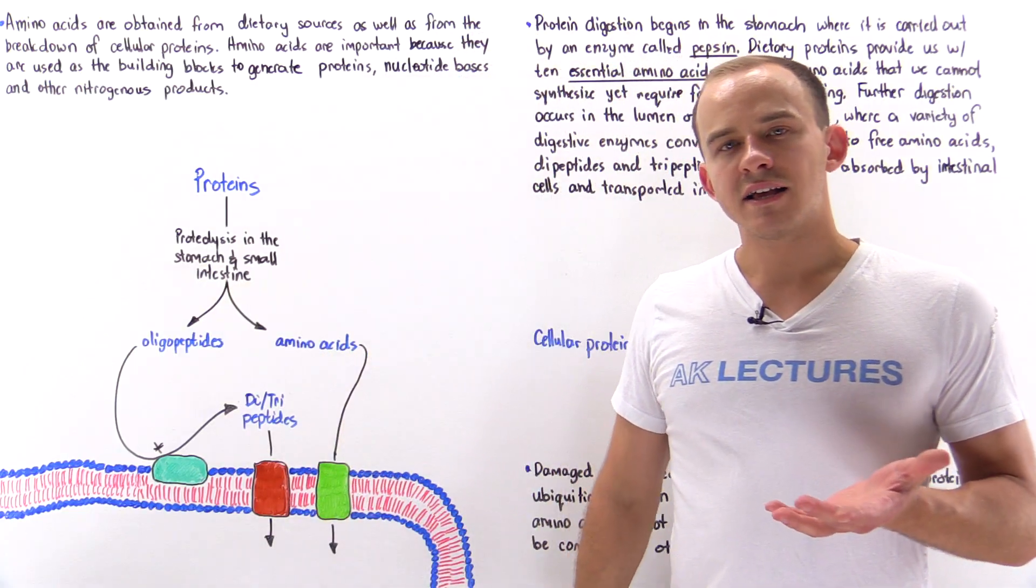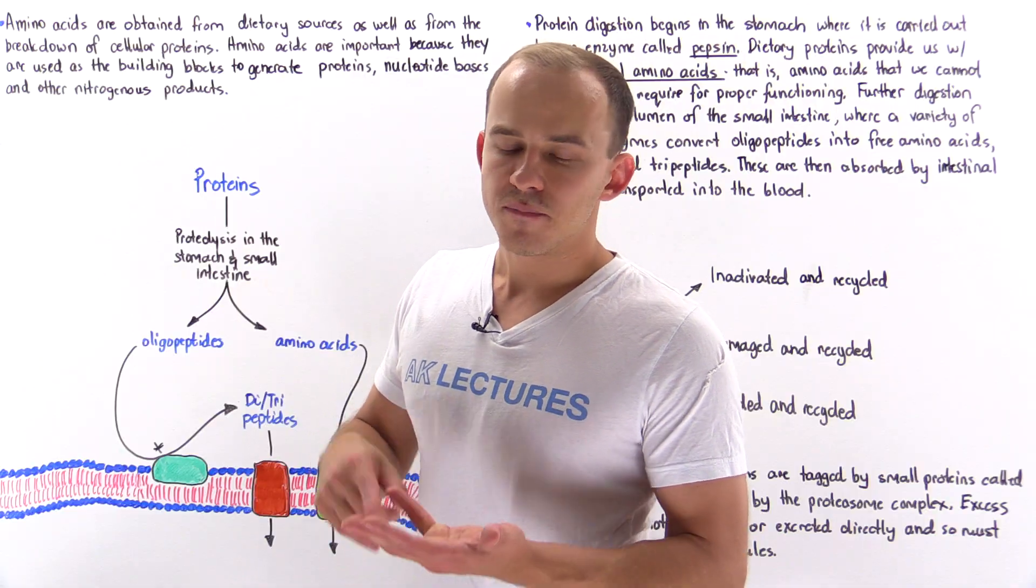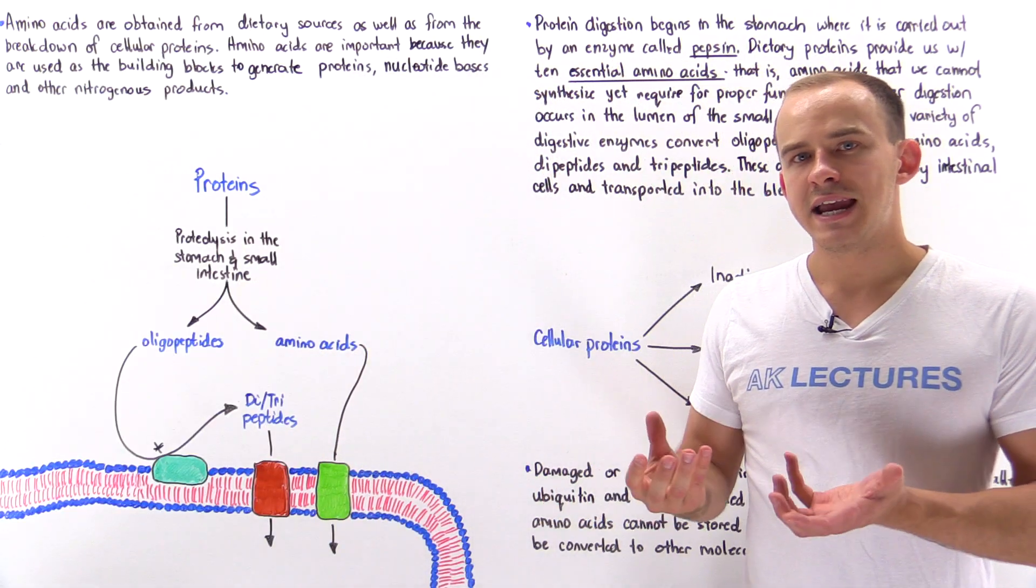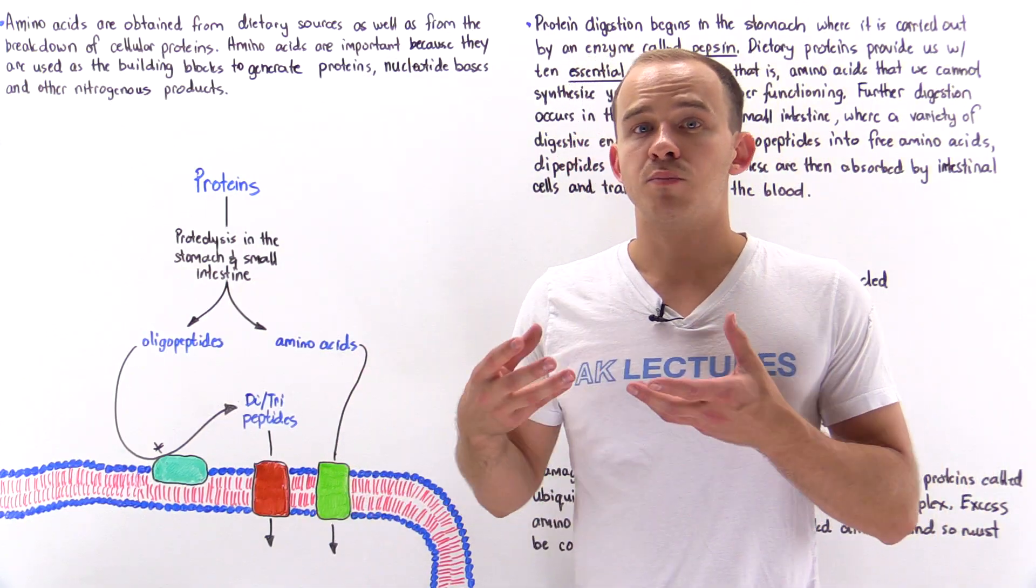So what exactly are amino acids and what are they used for? Well, amino acids are nitrogen-containing molecules that, as you may know, are the building blocks of protein.